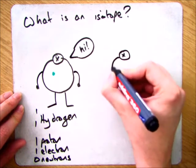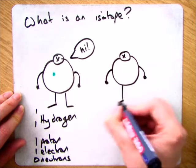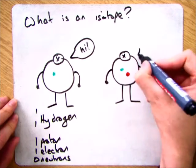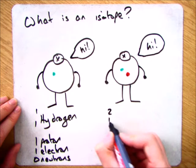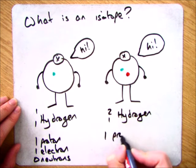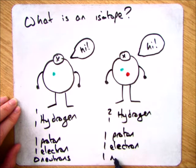There's a second isotope though which is called 2-1 hydrogen. So that 2 is the atomic mass, 1 is the atomic number which means I have one proton, bottom number, one electron, bottom number and one neutron, 2 take away 1.